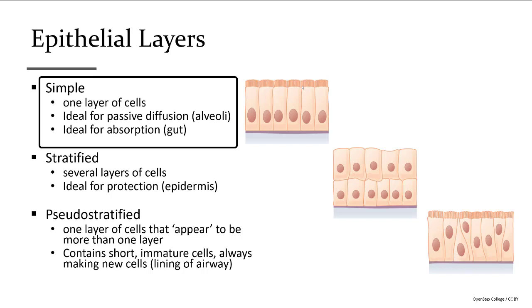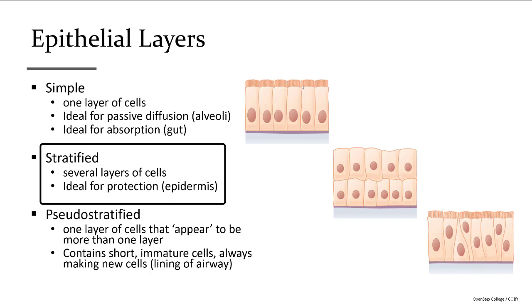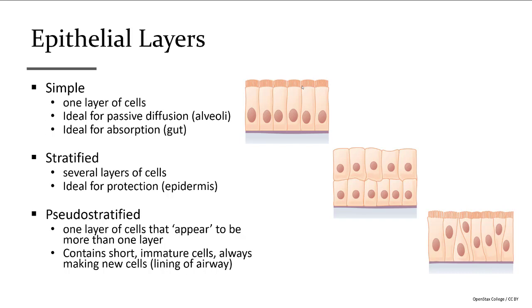Simple, or one-layer epithelium, is ideal for passive diffusion — in alveoli, oxygen or carbon dioxide crosses, or absorption occurs in the gut where nutrients are taken in. Stratified means we want more protection, so there are more cell layers; we also see this in glands. Pseudostratified is only in the lining of the airway. It has such a great cell turnover that you'll find small baby cells and taller mature cells at different levels of development, giving it a stratified look — but it is only one cell layer thick.